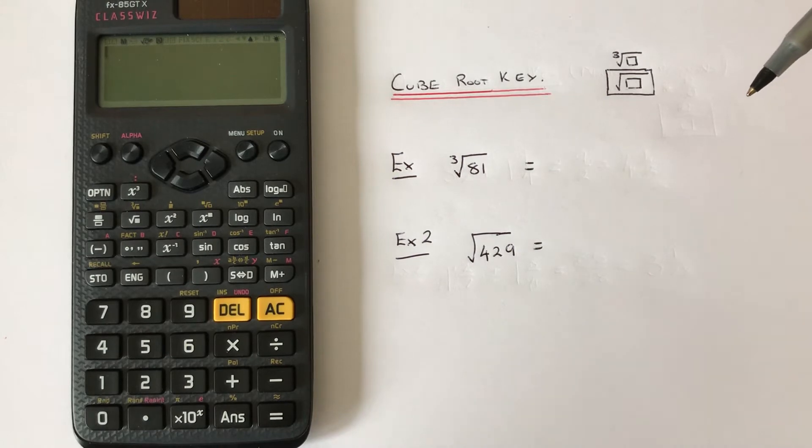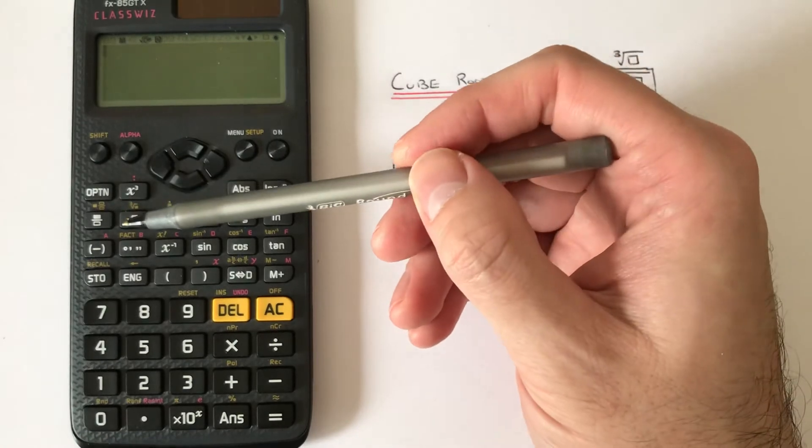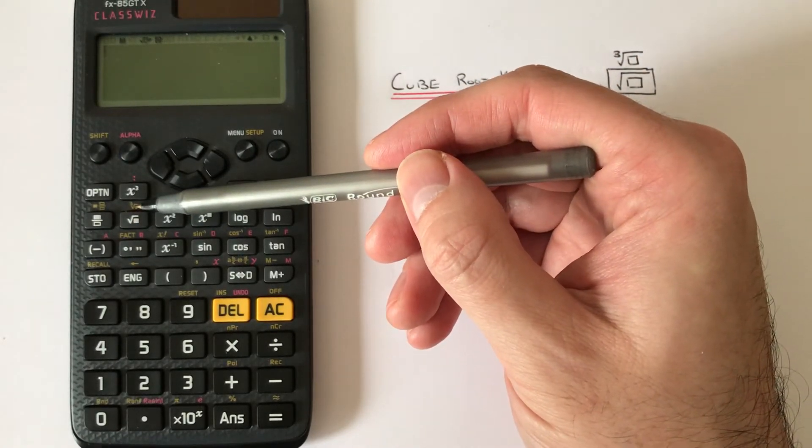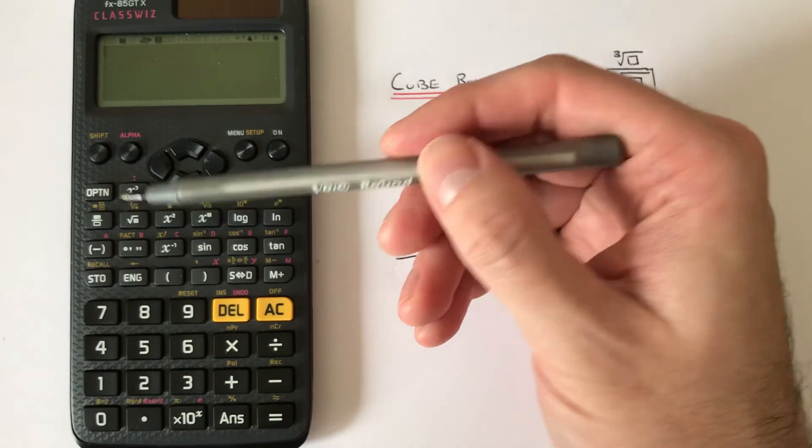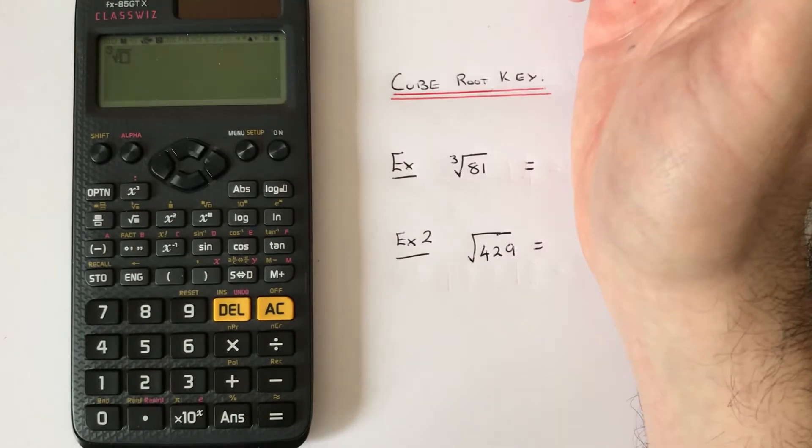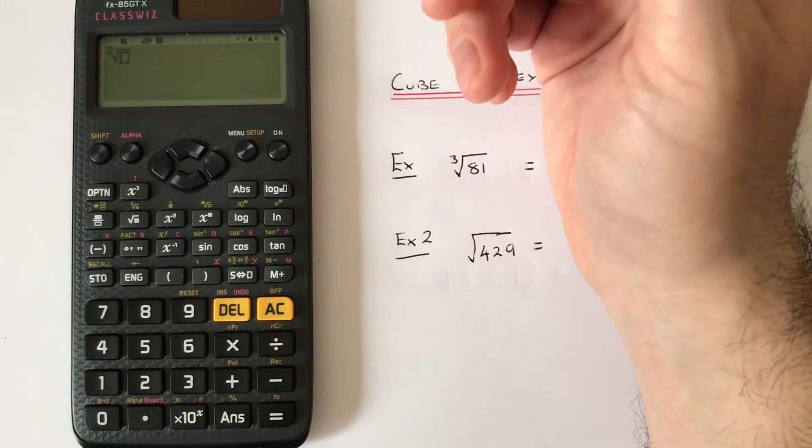To do this, we need to locate the cube root key, which is on the second row of the scientific functions. It is the second function, so we need to press shift square root. You see the cube root comes up on the screen.